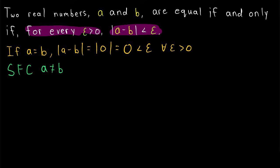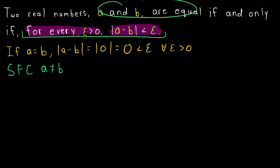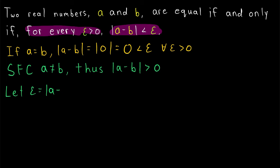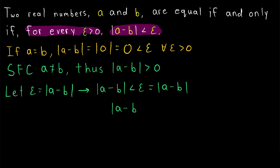Remember, we're trying to prove that a and b are equal given this condition, so we want to suppose that we have this condition and a and b are not equal. This is useful because a not being equal to b means there is some distance between them — the absolute value of a minus b must be greater than zero, since a and b are not equal. And perhaps you see the incoming problem. Since the absolute value of a minus b is greater than zero, it is a valid epsilon value. If we say epsilon is equal to the absolute value of a minus b, by our hypothesis we must have that the absolute value of a minus b is less than epsilon. But epsilon is equal to the absolute value of a minus b, so we have that the absolute value of a minus b is less than itself. That, of course, is no good. That's a contradiction.